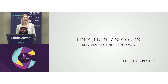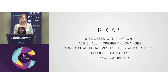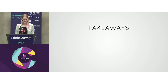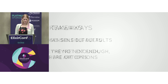The memory usage is not that bad either. It's a lot more work than the original version — it's not ten lines anymore — but I still feel like I probably wouldn't want to write this in Python or Ruby. To do a quick recap: we talked about optimization, worked through examples with small incremental changes, talked about what those changes did and how they affected execution time, looked at alternatives to standard tools, explored trade-offs like memory usage, and finally applied concurrency. The takeaways: Elixir has sensible defaults — Unicode safety by default, immutable data structures by default. It has great defaults, but when they're not enough, there are options. That's my talk. Thank you.